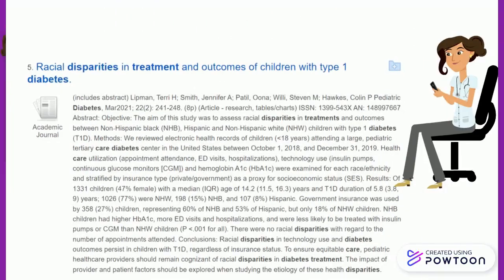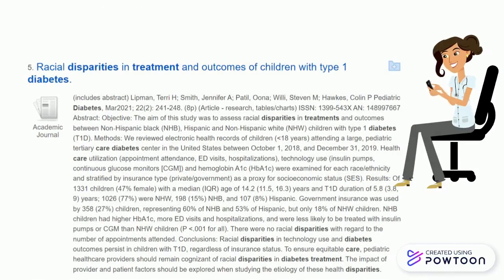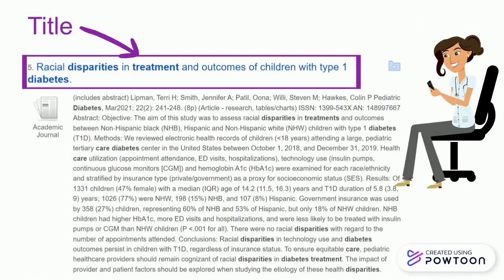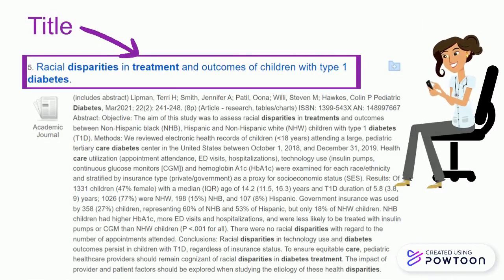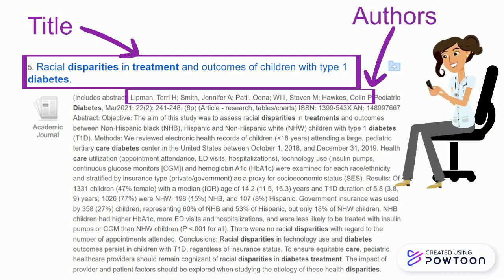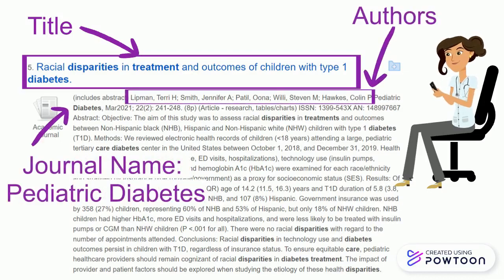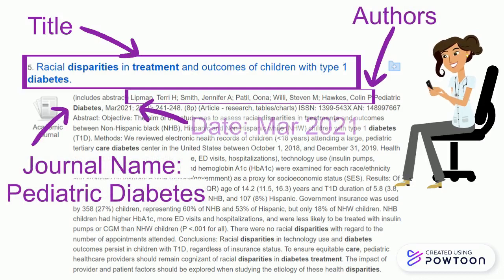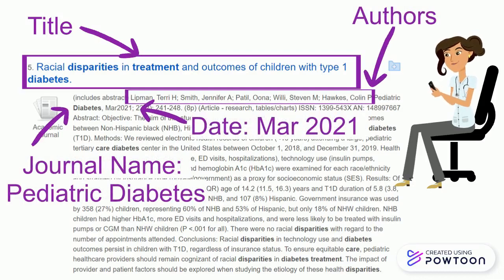Here is the record for the article, Racial Disparities in Treatment and Outcomes of Children with Type 1 Diabetes. The title is hyperlinked blue text at the top of the record. The authors are listed below the title. The journal title is Pediatric Diabetes, and the publication date is March, abbreviated to MAR 2021.